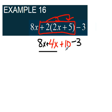But if you look, everything is already grouped together. We have the x's together and the constants together, so I can just add each piece. 8x and 4x is going to give us 12x and the 10 minus 3 will give us 7.